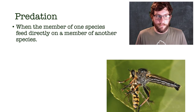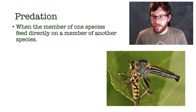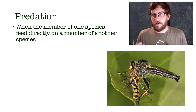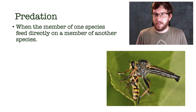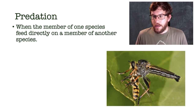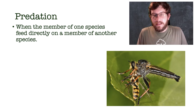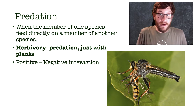Predation is my favorite — it's when a member of one species kills and eats another species. Here's an example of one of my favorite predators: a robber fly catching another insect on the wing. These guys pierce their prey's exoskeleton with a proboscis, paralyze them, liquefy their insides, and suck them out — gross but really cool. They can be pretty small or as big as your thumb depending on the species. This is definitely a positive-negative interaction.